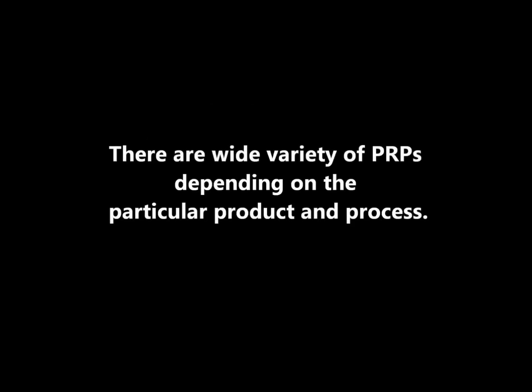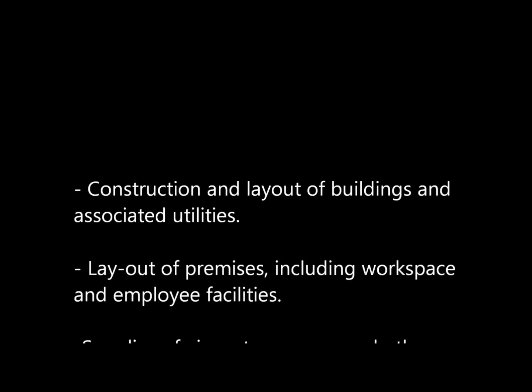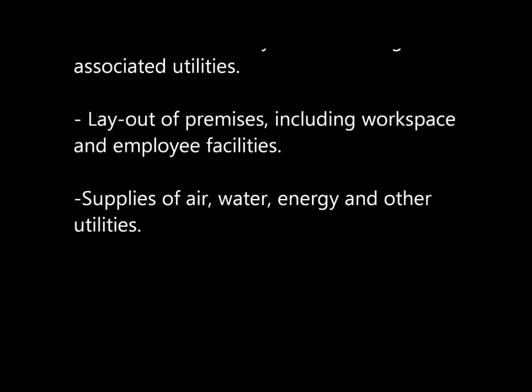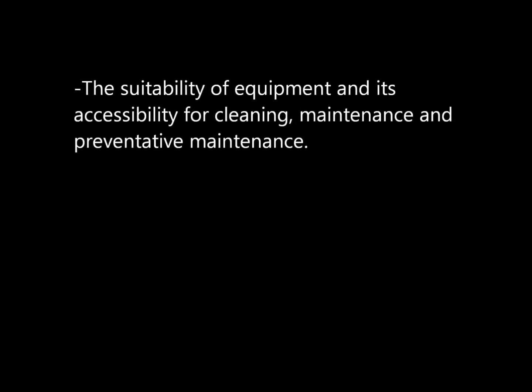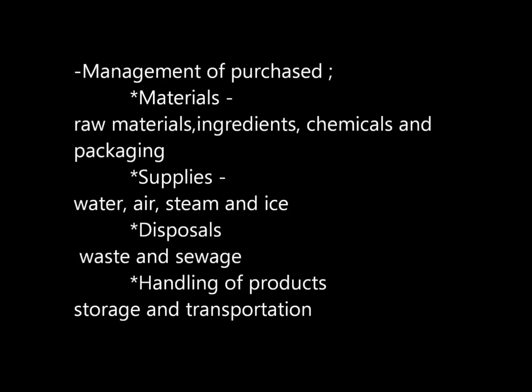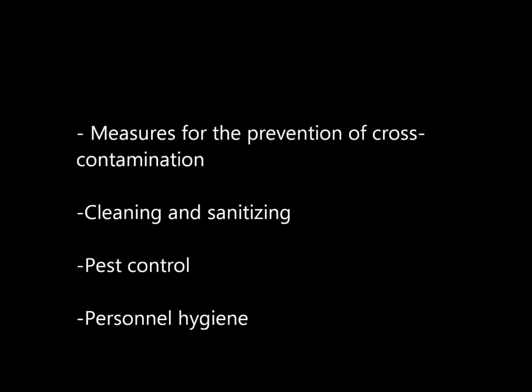There are a wide variety of PRPs depending on the particular product and process. Examples of PRPs in a food manufacturing environment would be: construction and layout of buildings and associated utilities; layout of premises including workspace and employee facilities; supplies of air, water, energy and other utilities; supporting services including waste and sewage disposal; suitability of equipment and its accessibility for cleaning, maintenance and preventative maintenance; management of purchased materials, supplies, disposals and handling of products; measures for the prevention of cross-contamination; cleaning and sanitizing; pest control; and personnel hygiene.